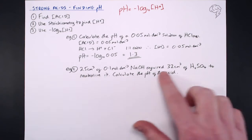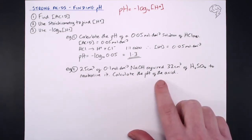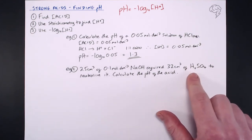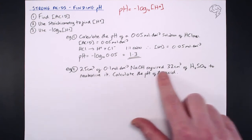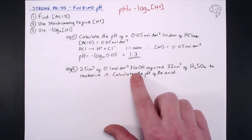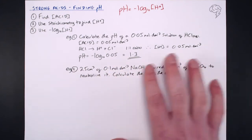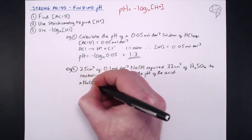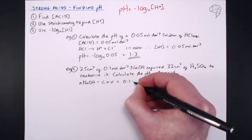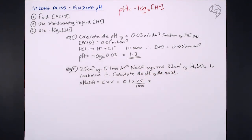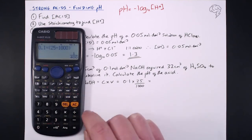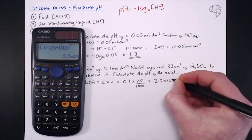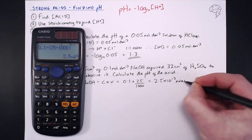First thing we need to do is find the concentration of the acid — imagine this is a titration. To find the concentration of acid, we need to find the number of moles of acid in that 32 cm³. Let's find the number of moles of sodium hydroxide first. Number of moles of NaOH equals concentration times volume: 0.1 multiplied by 25/1000, which gives us 2.5 × 10⁻³ moles of sodium hydroxide.